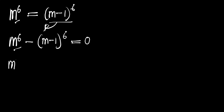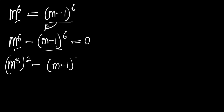The next thing we are going to do is rewrite n to the power 6 as (n to the power 3) squared, and similarly rewrite (n minus 1) to the power 6 as ((n minus 1) to the power 3) squared, and this equals 0. If you multiply those two exponents you get 6, and 3 times 2 again gives you 6.